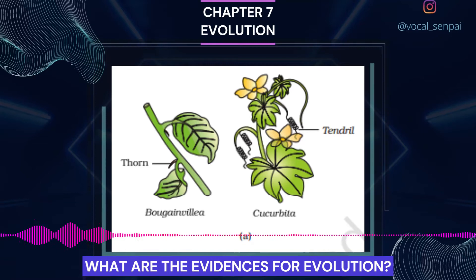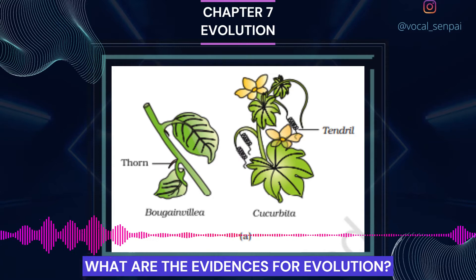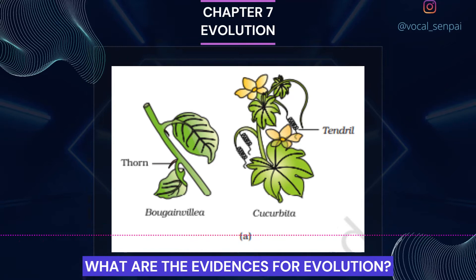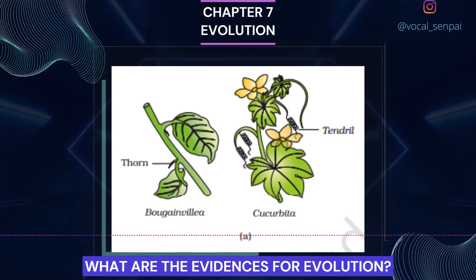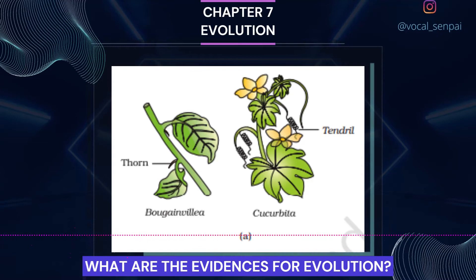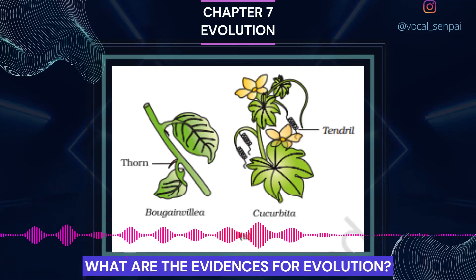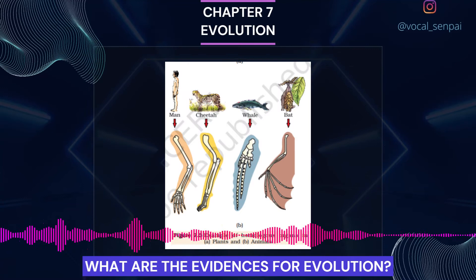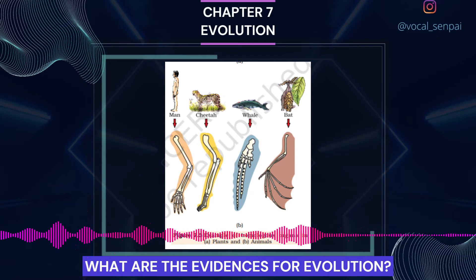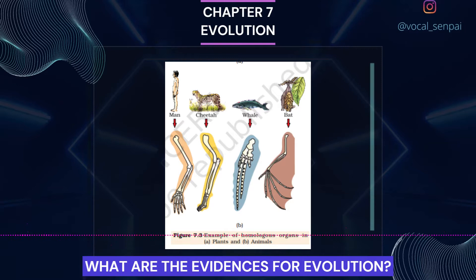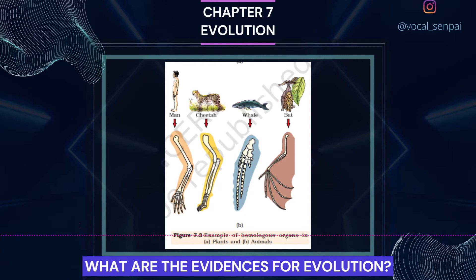Other examples of homology are vertebrate hearts or brains. In plants also, the thorn and tendrils of Bougainvillea and Cucurbita represent homology. Homology is based on divergent evolution, whereas analogy refers to a situation exactly opposite. Wings of butterfly and of birds look alike. They are not anatomically similar structures though they perform similar functions. Hence, analogous structures are a result of convergent evolution — different structures evolving for the same function and hence having similarity. Other examples of analogy are the eye of the octopus and of mammals, or the flippers of penguins and dolphins. Sweet potato (root modification) and potato (stem modification) are another example of analogy.